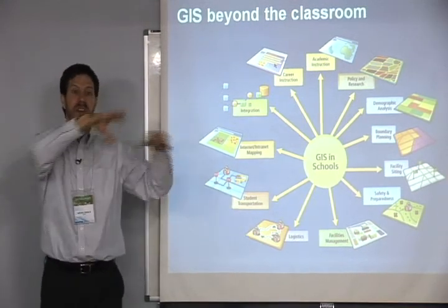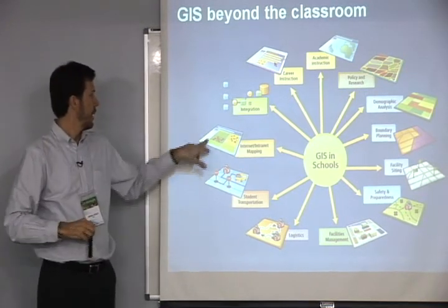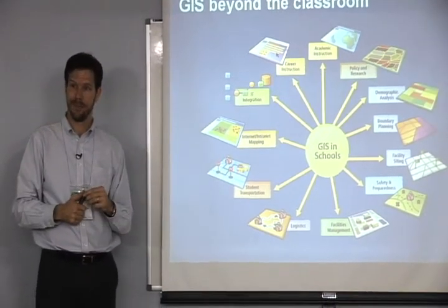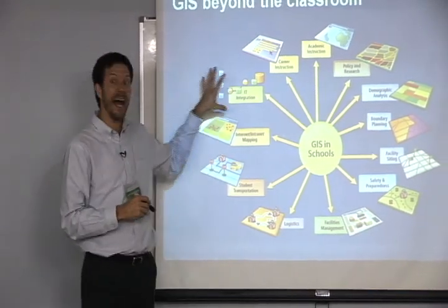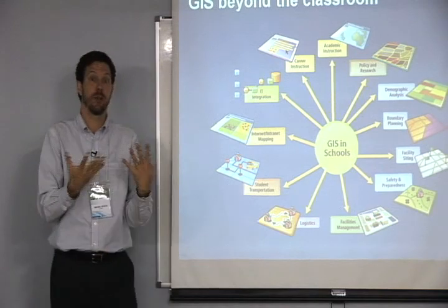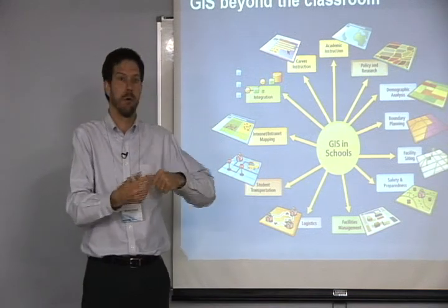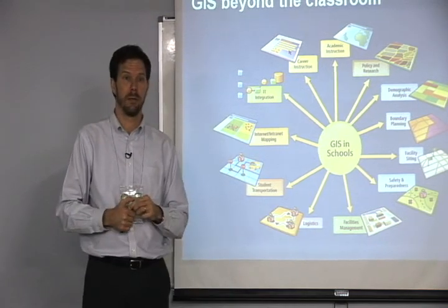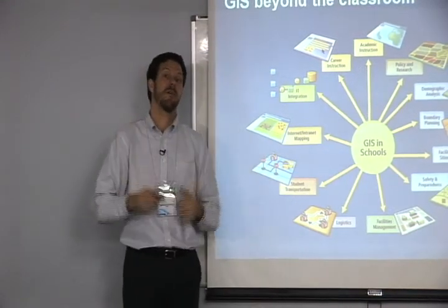Logistics — all of the vehicles moving people and cargo around the campus. Internet mapping: many universities still do not have a good campus map on the internet, and when I say a good campus map, I don't mean a PDF. I mean a live map that allows a visitor to learn where is the visitor parking, where is the biology department, where are the dormitories. It's a good opportunity to start applying GIS for the business of the university.